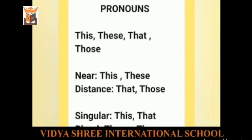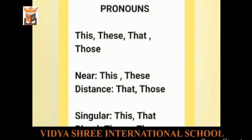The third category of pronoun is demonstrative pronoun. The pronouns which refer to things near and at a distance are called demonstrative pronouns — pronouns we use to point at things. These include this, these, that, those. This and these are used for things which are near, and that and those express distance. This and that are used for singular objects, while these and those are used for plural objects.